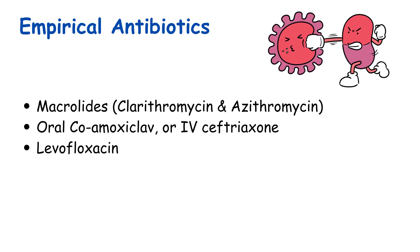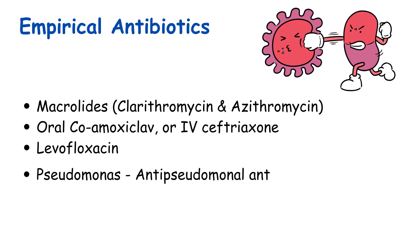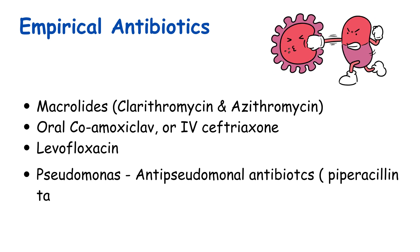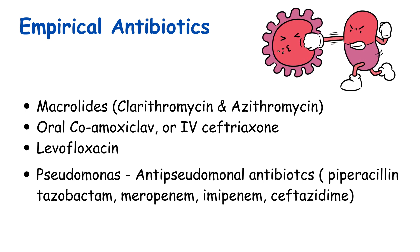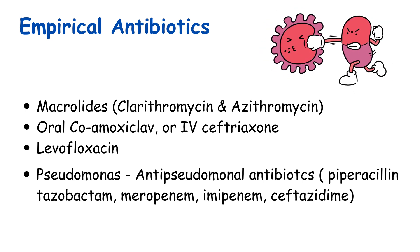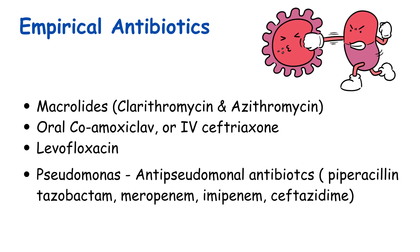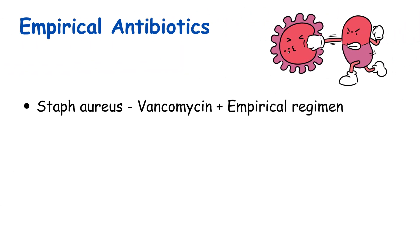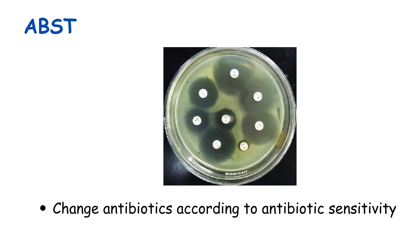A respiratory fluoroquinolone such as levofloxacin can be used as monotherapy. In rare cases where Pseudomonas is suspected — such as in patients with COPD, bronchiectasis, or greenish-yellow sputum — an anti-pseudomonal beta-lactam antibiotic such as piperacillin-tazobactam, meropenem, imipenem, or ceftazidime should be combined with a fluoroquinolone such as levofloxacin. If Staphylococcus aureus is suspected, IV vancomycin should be added to the empirical regimen. If microbiological investigations yield an organism, antibiotics should be changed based on susceptibility pattern.